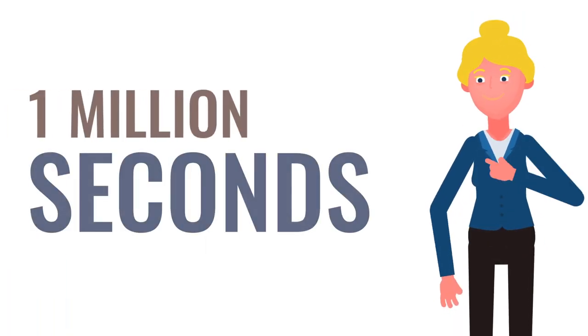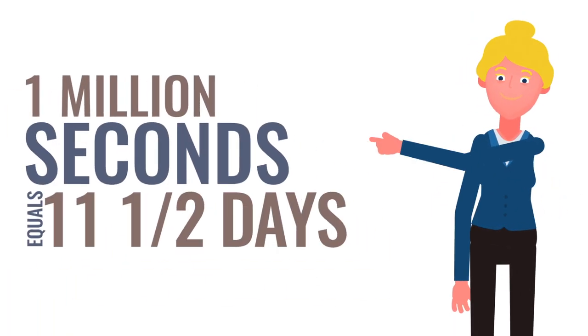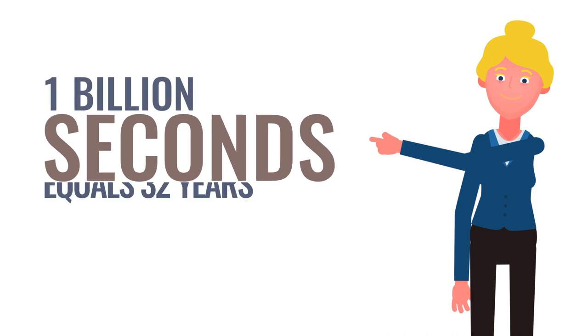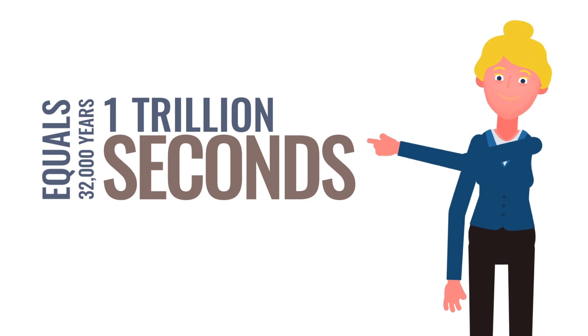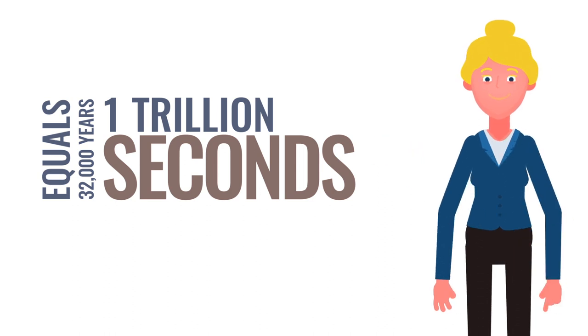To put that in perspective, 1 million seconds is equal to 11 and a half days. 1 billion seconds is equal to 32 years. And 1 trillion seconds is equal to 32,000 years.